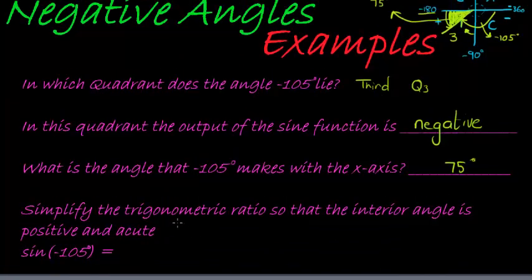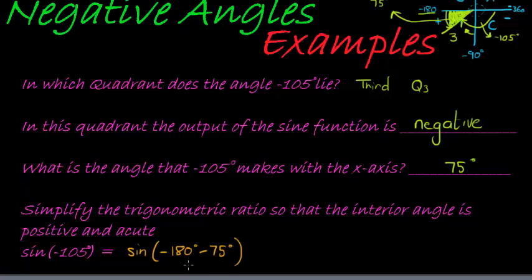And then it says simplify the trigonometric ratio so that the interior angle is positive and acute. So we can see that negative 105 can be written as negative 180 degrees plus 75 degrees to get to negative 105 degrees. And this is in the third quadrant where sine is negative, so we have to multiply by negative sine of 75 degrees.